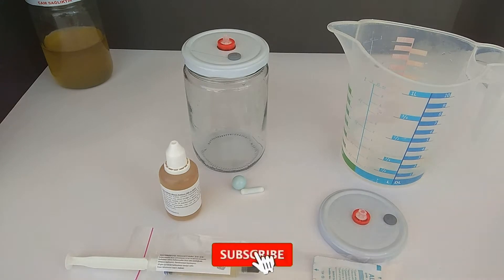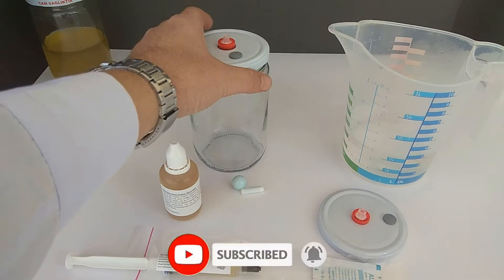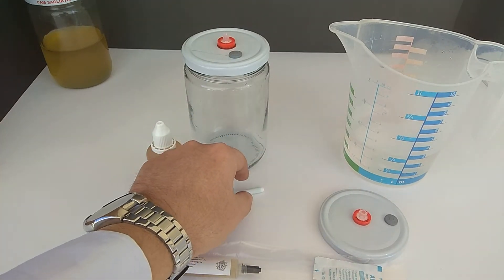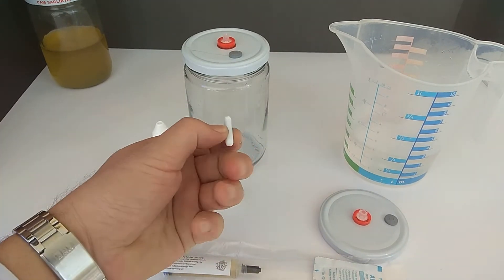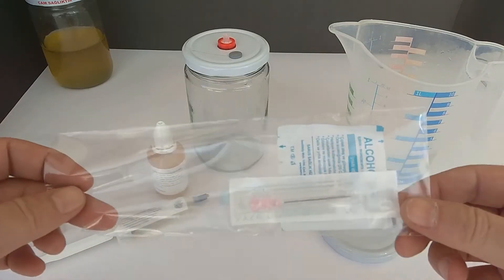For this process, we need 300ml of hot water, a jar, a lid with a filter and an injection port, a powder or liquid main culture additive, a glass ball or a magnetic stir bar, 10ml of liquid culture, alcohol cleaning wipes, and a sterile needle.